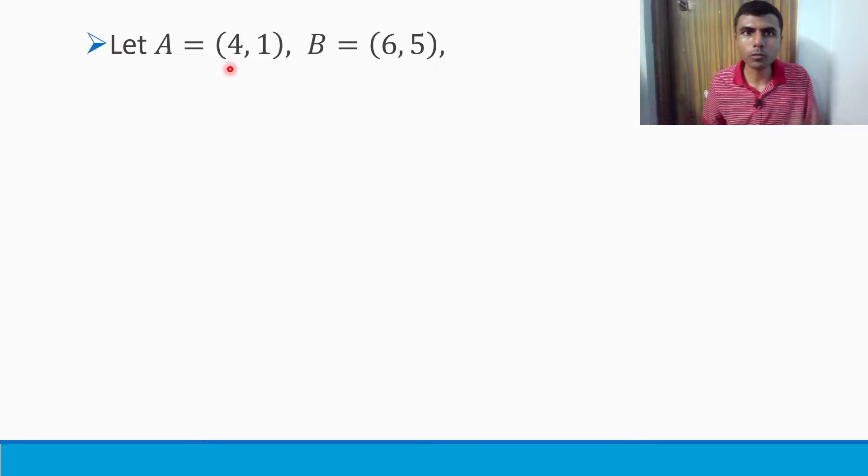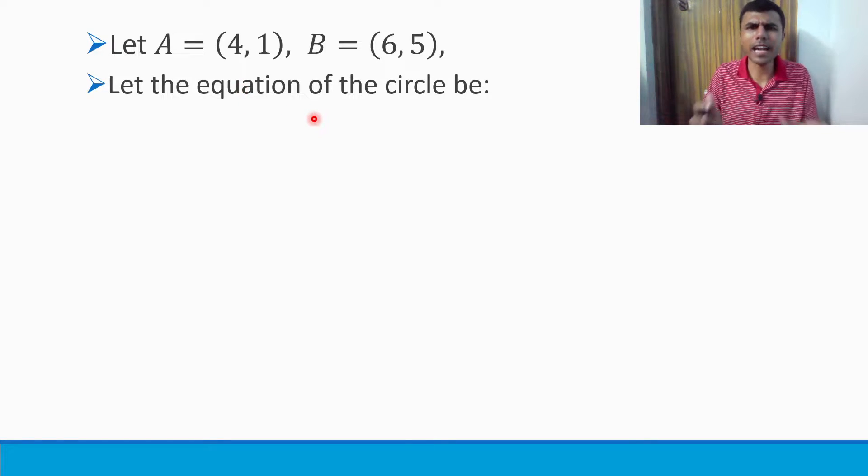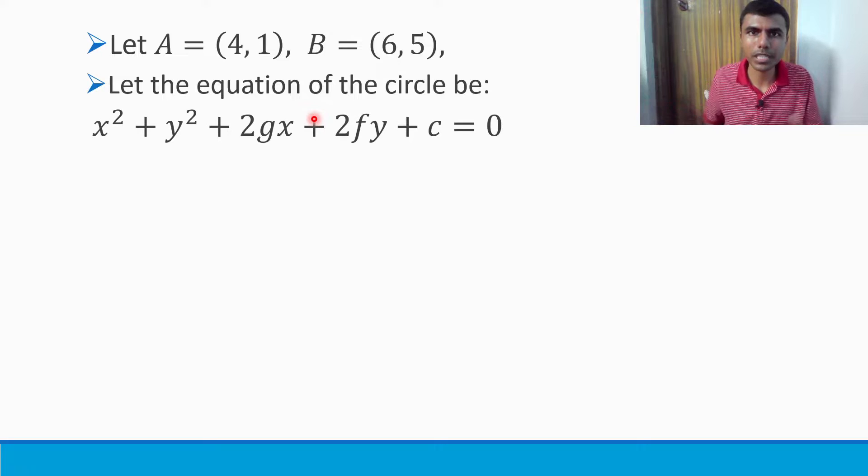First let us take the two points as A and B. A is (4,1) and B is (6,5). I'm going to take the equation of circle as the standard one: x² + y² + 2gx + 2fy + c = 0. Since the circle equation is this, these two points lie on the circle. These two points satisfy the circle.